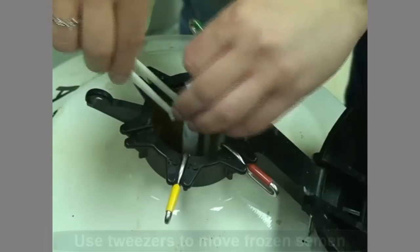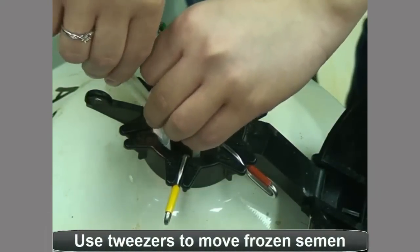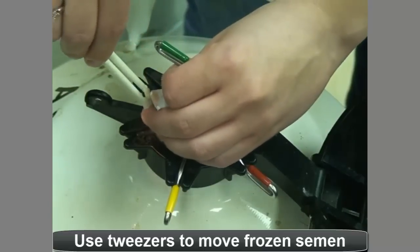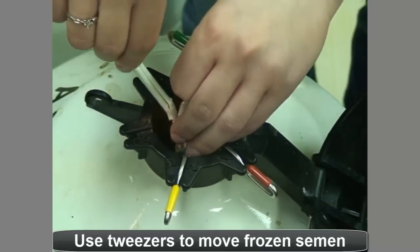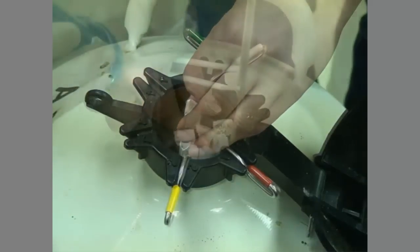Work quickly to remove the straw using tweezers instead of bare hands to touch the straws. Plastic tweezers designed to handle semen straws can be used. Take care not to bend or break the straws.